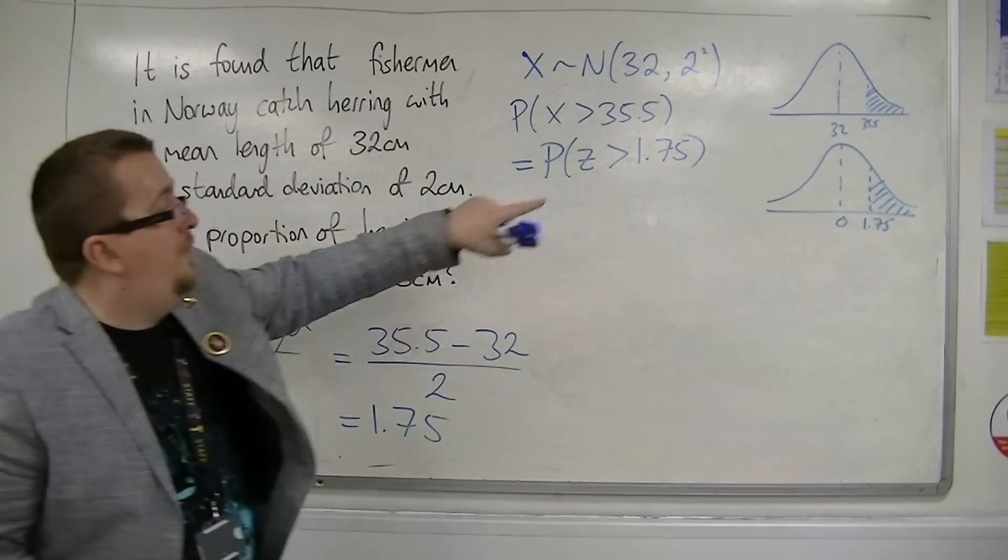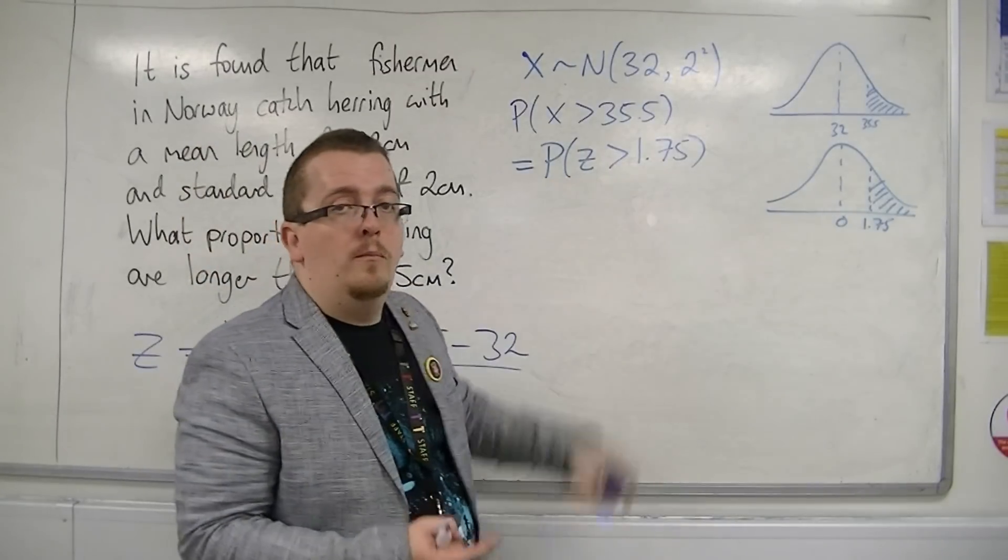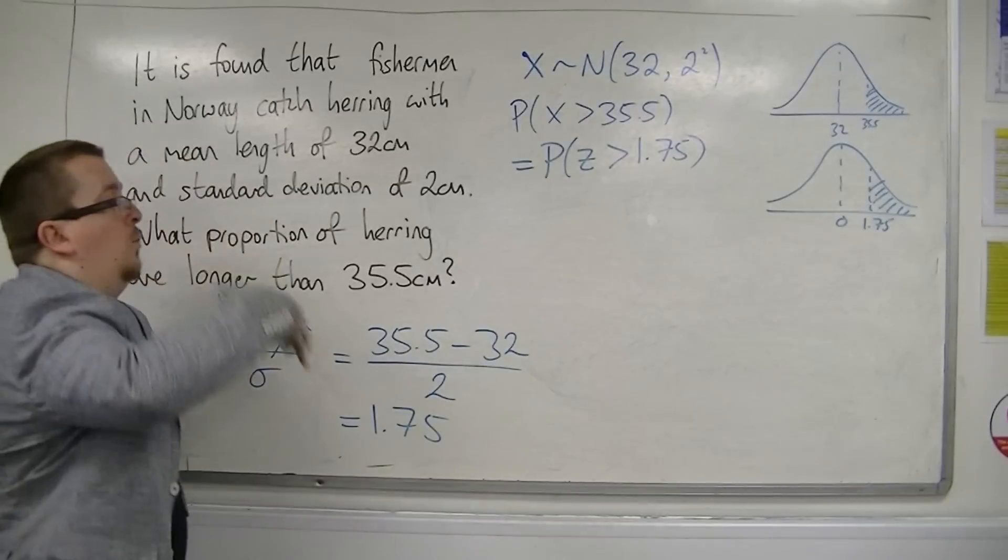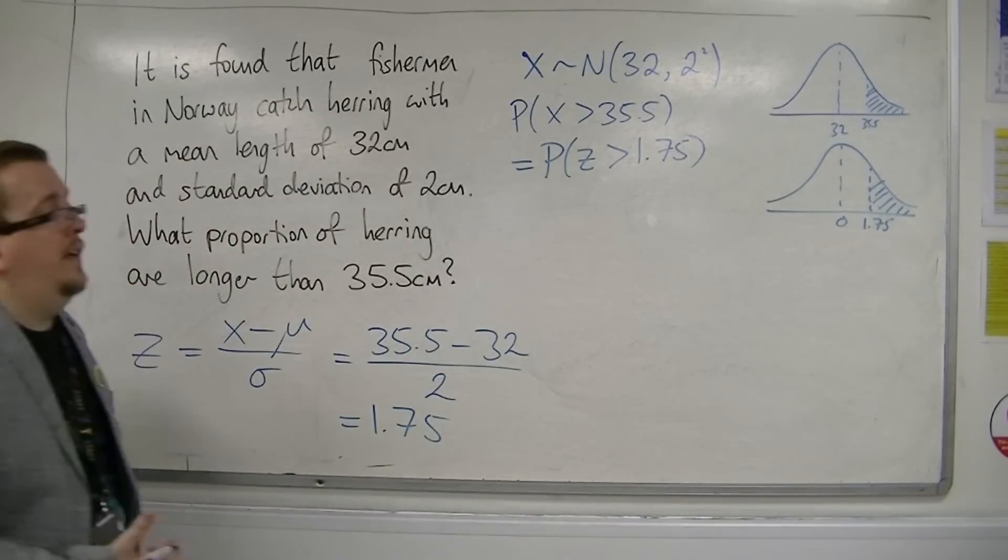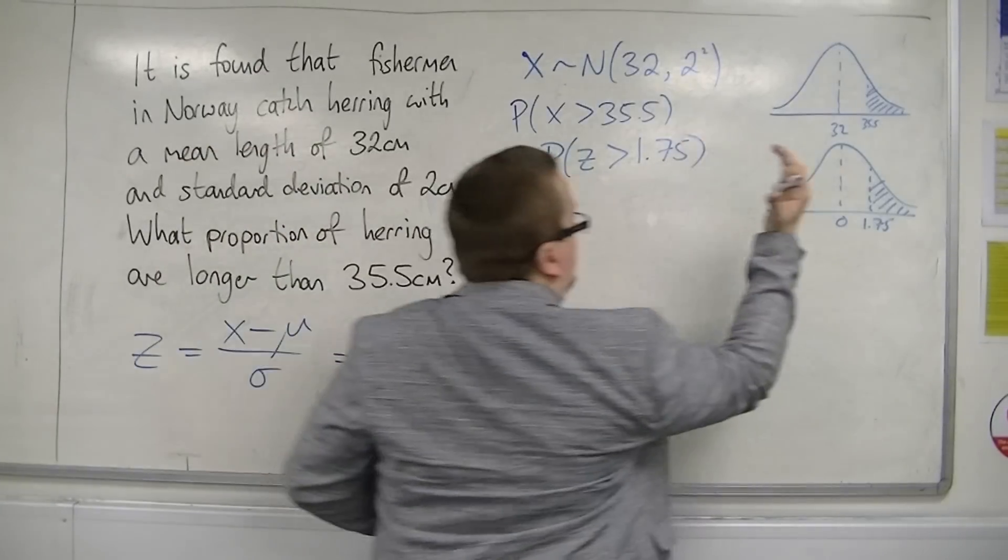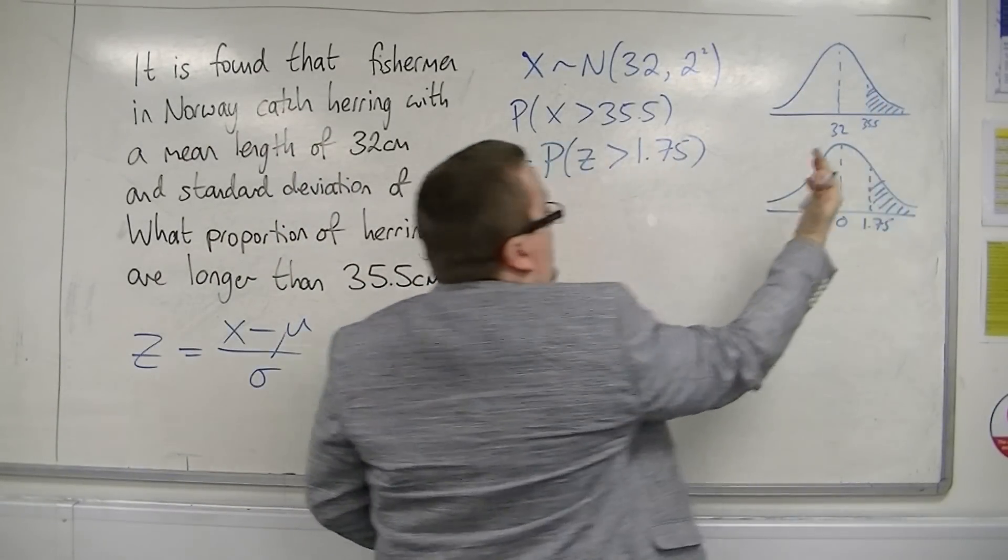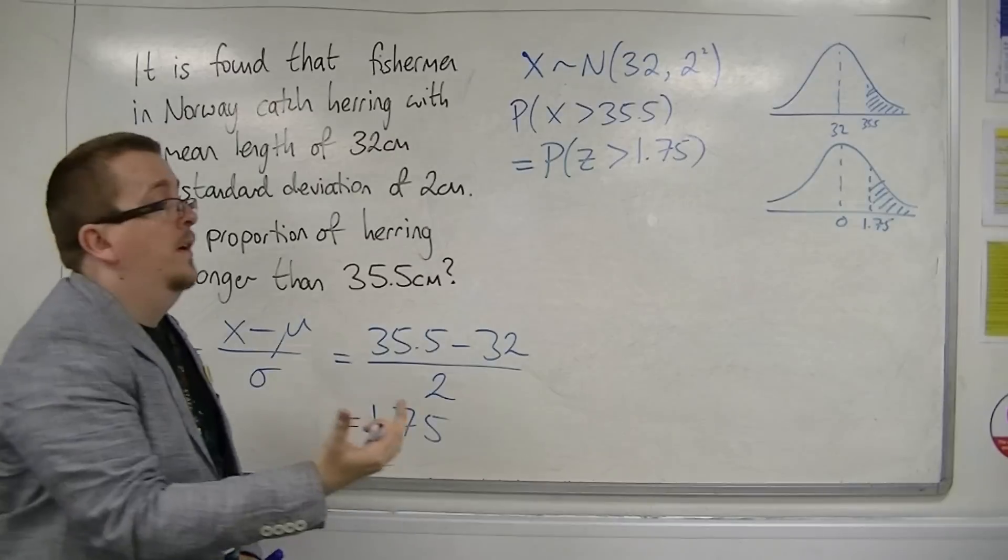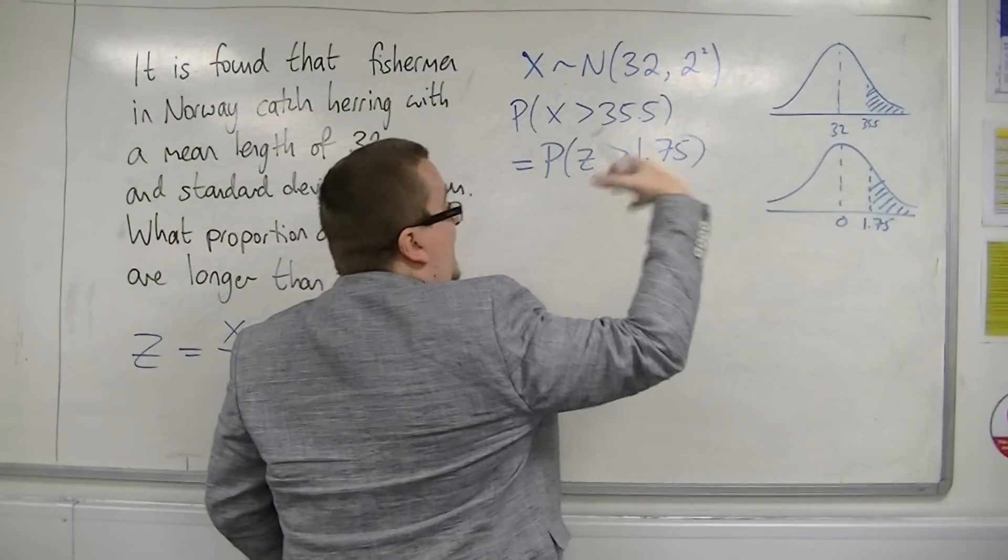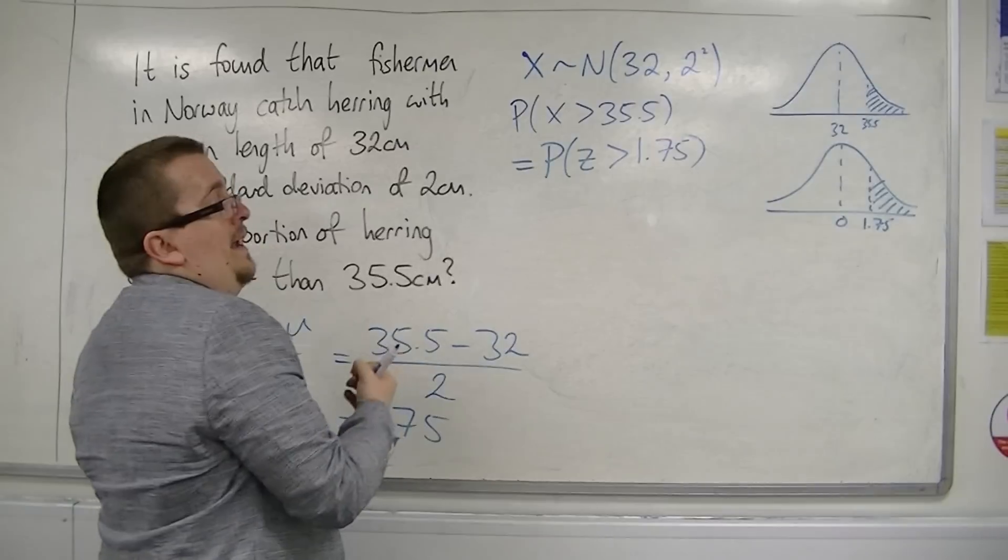Now, in order to find when z is greater than 1.75, what we're going to be looking at is any probability to the left, because that's what the tables in the back of the formula booklet do. They always look at the probability of z being less than a value.